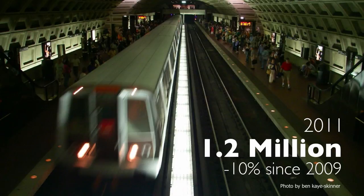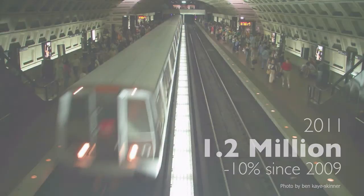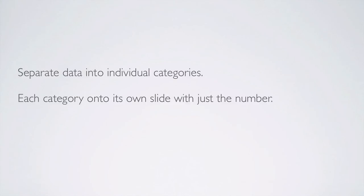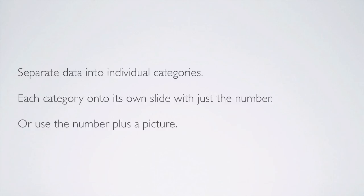But you can certainly do it without the picture. In fact, most Apple presentations will show just a number, so you know it's ok when Apple does it. To summarize: take your data and separate it into individual categories. Put each category onto its own slide with just the number, or use the number plus a picture. The key is to not get stuck in the habit of just copying and pasting a table and thinking that your audience is going to understand it — and equally important, thinking they'll remember what you told them.